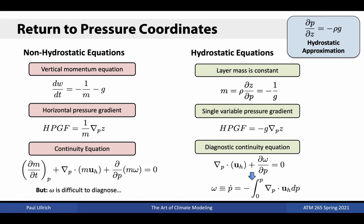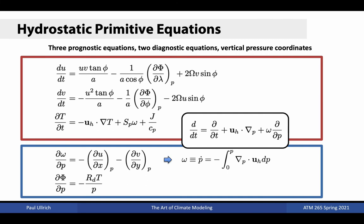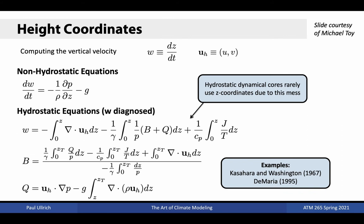With the hydrostatic assumption in place, the system closes with only three prognostic equations — two for dynamics and one for thermodynamics — along with two constraint equations for the vertical pressure velocity and the geopotential. The continuity equation can be integrated from the top of the atmosphere to obtain the vertical pressure velocity at each layer, solving our earlier need for a complex expression for diagnosing omega. Although the hydrostatic approximation can be formulated in vertical height coordinates, this is almost never done, as the vertical velocity diagnosis yields a rather nasty-looking expression.